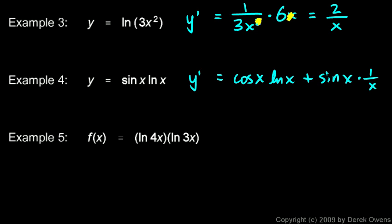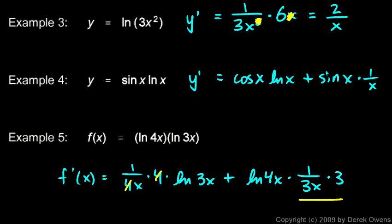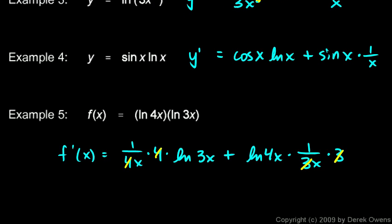Example 5: f(x) equals ln(4x) times ln(3x) — again using the product rule. The derivative of ln(4x) by the chain rule is 1 over 4x times 4, times ln(3x), plus ln(4x) times the derivative of ln(3x), which is 1 over 3x times 3 by the chain rule. The 4's cancel and the 3's cancel, simplifying to ln(3x) over x plus ln(4x) over x.